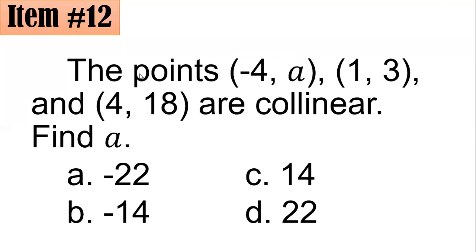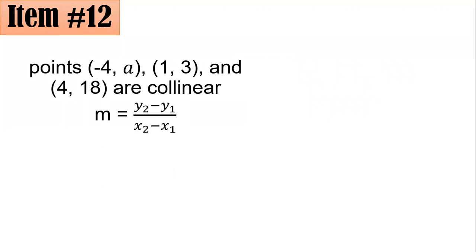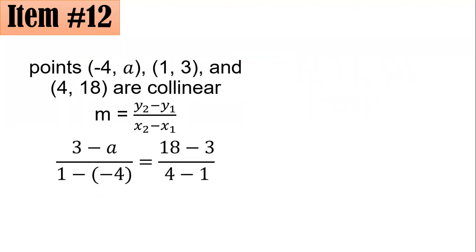Remember this: if you are given three points on a Cartesian plane that are collinear, and you pick any two points, their slopes have to be equal. So in this case, I solve for the slope of negative 4, A and 1, 3.